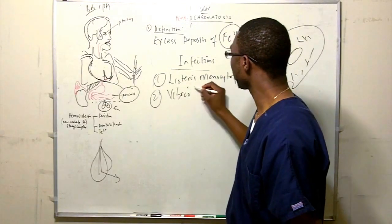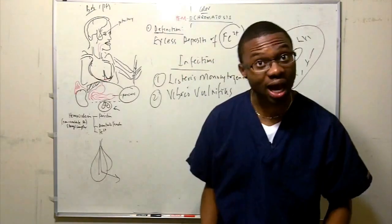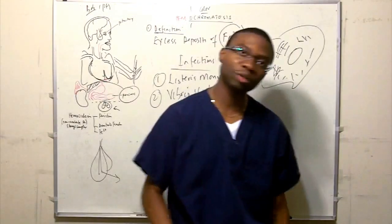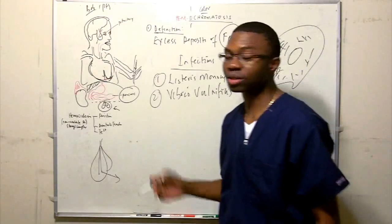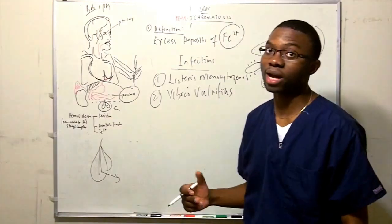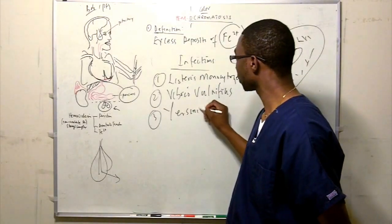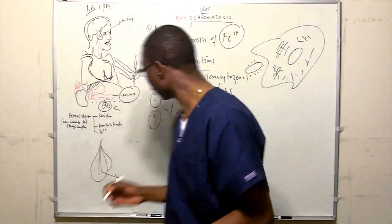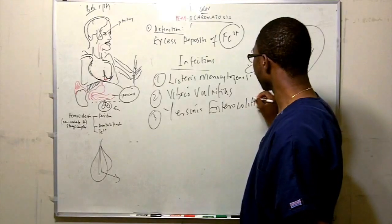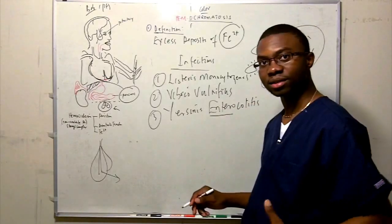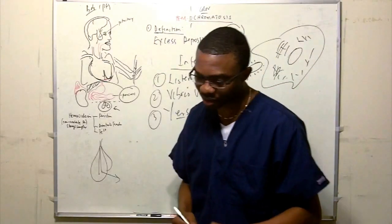The second organism is Vibrio vulnificus — another iron-loving bacteria that flourishes in these patients because the immune system can't fight them off, causing diarrhea. The third is Yersinia enterocolitica — enterol means GI tract, colitis means inflammation of the GI tract. Watch out for Yersinia — it also causes diarrhea. These are the three organisms that cause infection in hemochromatosis patients.